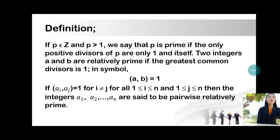If gcd(a_i, a_j) = 1 for i not equal to j, for all 1 ≤ i ≤ n and 1 ≤ j ≤ n, then the integers a_1, a_2, and so on through a_n are said to be pairwise relatively prime.